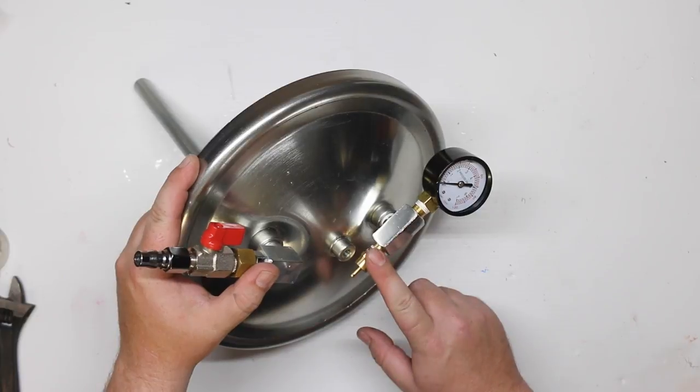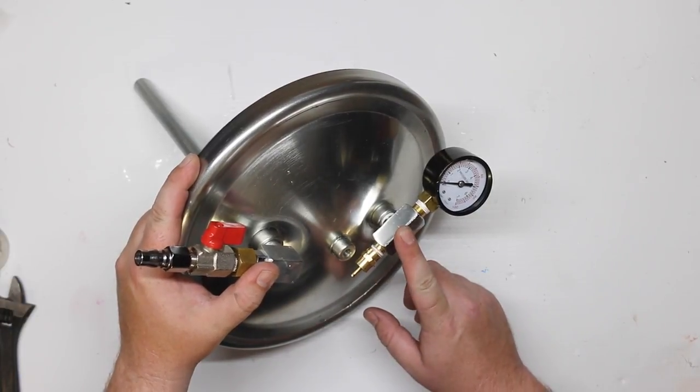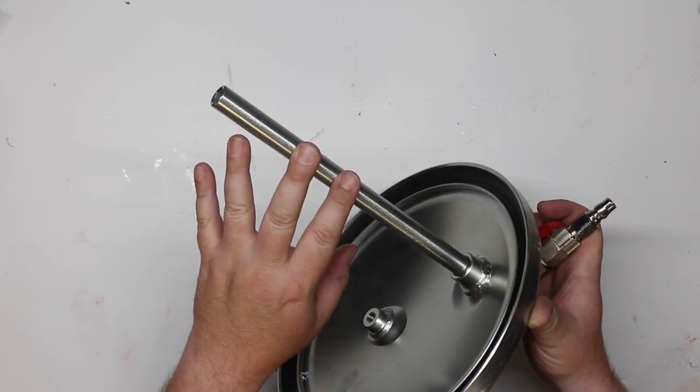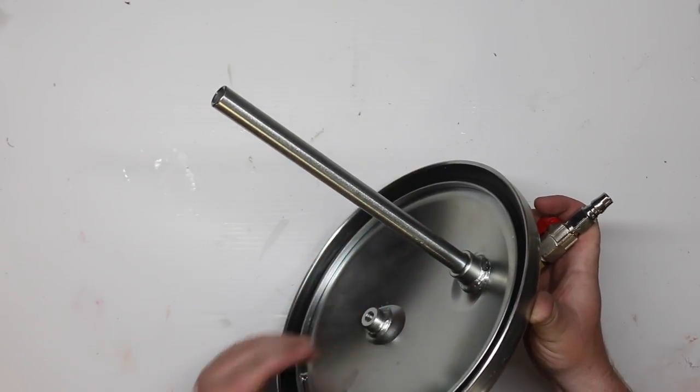Now make sure you put some pipe sealant or thread tape on there. That way you don't get any leaks. So we've got more room in the casting pot. We can cut off this inlet tube because we no longer need it.